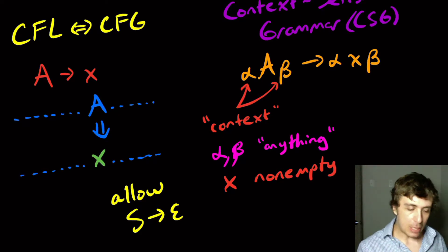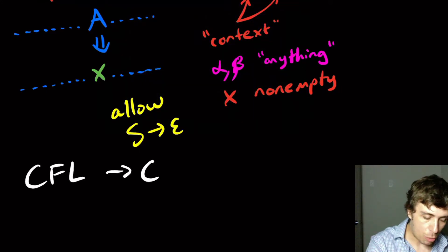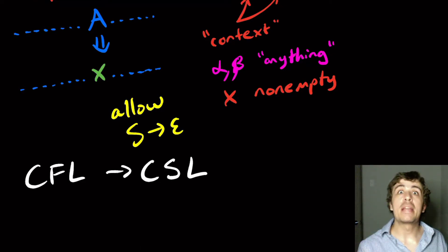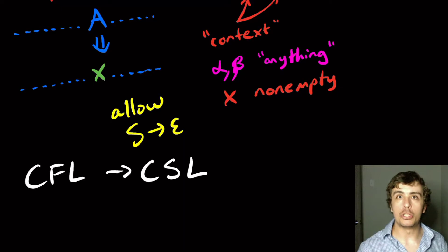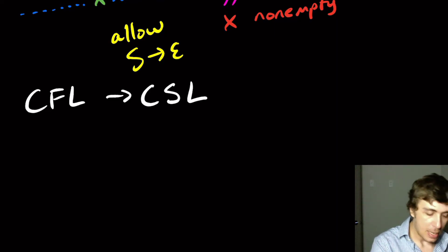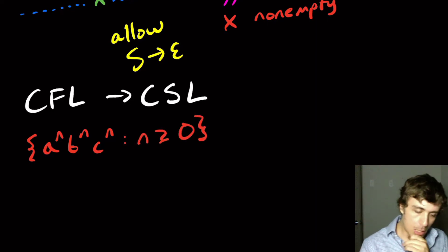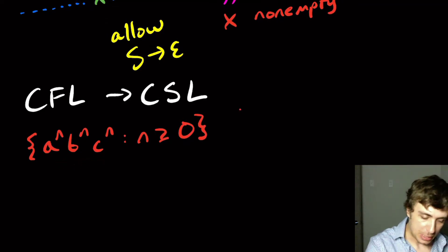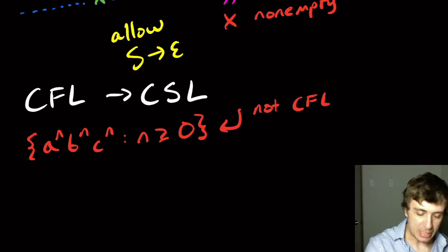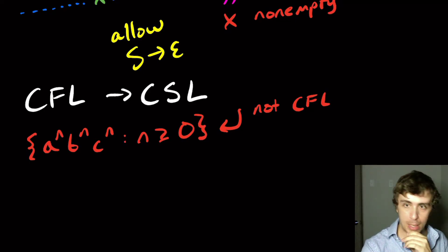If it's a CFL, it already is a context-sensitive language. But what about the other way — is every context-sensitive language also context-free? I'm going to show that is not the case. We can actually make a context-sensitive grammar for something that is not context-free. The prototypical language for this is a^n b^n c^n, where n ≥ 0. This language is not context-free — I've done many videos showing that — and what I want to show is that you can make a context-sensitive grammar for it.